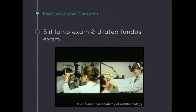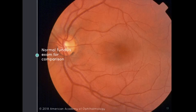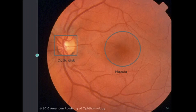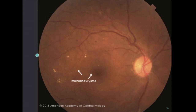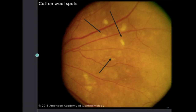Once we have elicited a pertinent history, we will perform a slit lamp and dilated fundus exam. When looking at the back of the eye on a fundus exam, a healthy eye shows the optic disc, the macula — which is important in central vision and has the highest visual acuity — and normal retinal vessels. In this 53-year-old patient's fundus photo, one can appreciate microaneurysms caused by microvascular compromise, hard exudates which are lipid residues of serous leakage from damaged vessels, and cotton wool spots, which develop secondary to retinal arterial obstruction causing ischemic damage to the retinal nerve fiber layer. These findings can be seen in both NPDR and PDR.